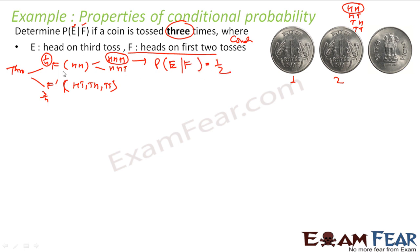Just by the graphical method, I can say that 1 by 2 is the conditional probability of getting a head on the third toss given heads on the first two tosses. Now let us solve the same problem using the formula.